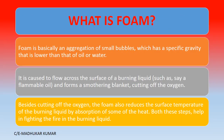What is foam? Foam is basically the aggregation of small bubbles which has a specific gravity lower than that of oil or water — meaning it floats above the surface so the fire can be fought. It flows across the surface of a burning liquid such as flammable oil and forms a smothering blanket, cutting off the oxygen. So foam works as a smothering agent and extinguishes the fire. Besides cutting off the oxygen, foam also reduces the surface temperature of the burning liquid and absorbs heat from that surface, and both these steps help in fighting the fire.